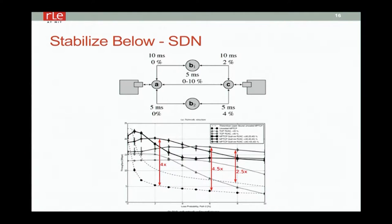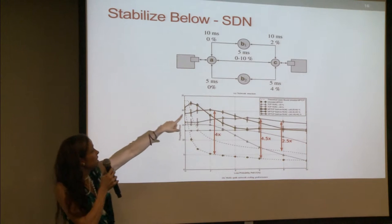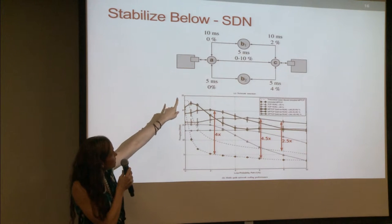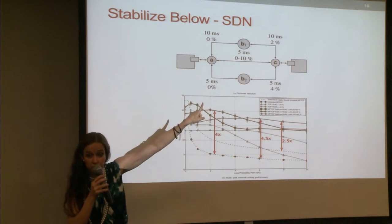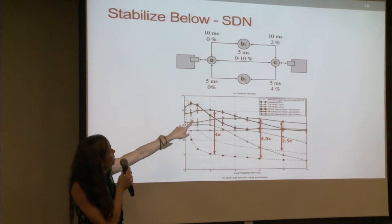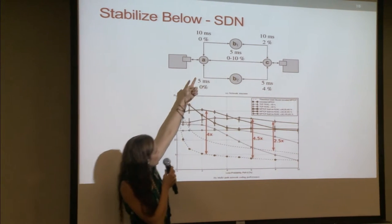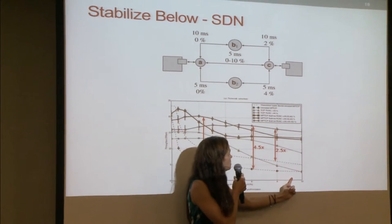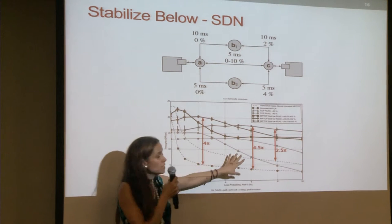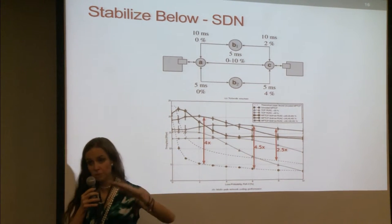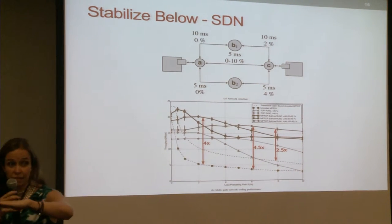This is a multipath implementation. You can see the different losses — the only place where we're varying losses is in one link, which corresponds to the abscissa. You can see the gains in TCP goodput by just stabilizing the layer below using the SDN approach we saw before.